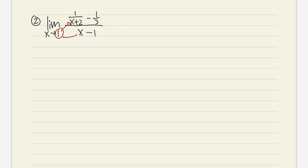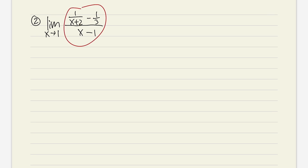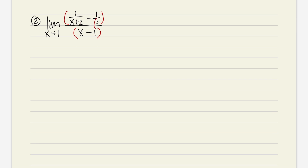So what can we do here? We have a complex fraction — small fractions inside of a big one. To simplify a complex fraction, we multiply the top and bottom by the lowest common denominator of the small fractions, which here are 3 and x plus 2. So let's multiply by that on both top and bottom.